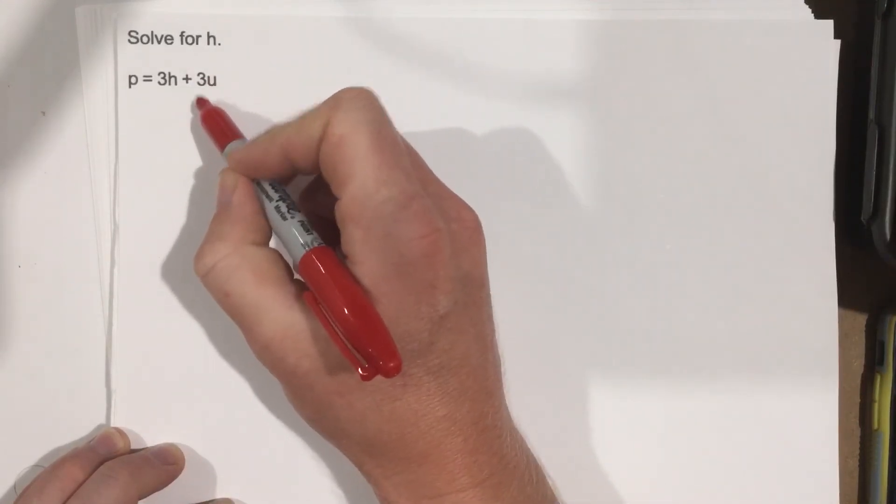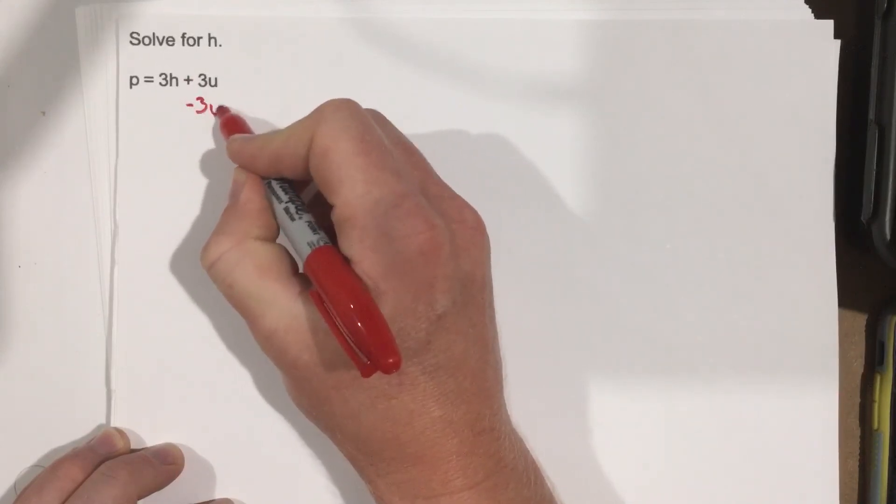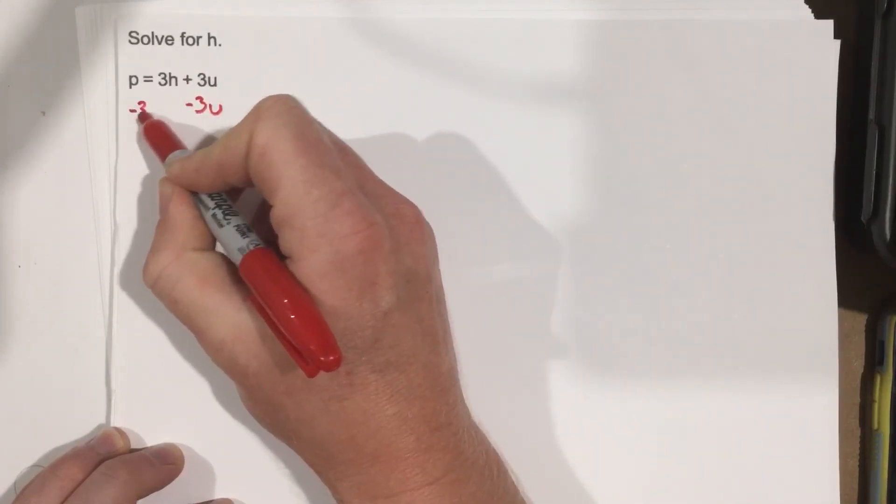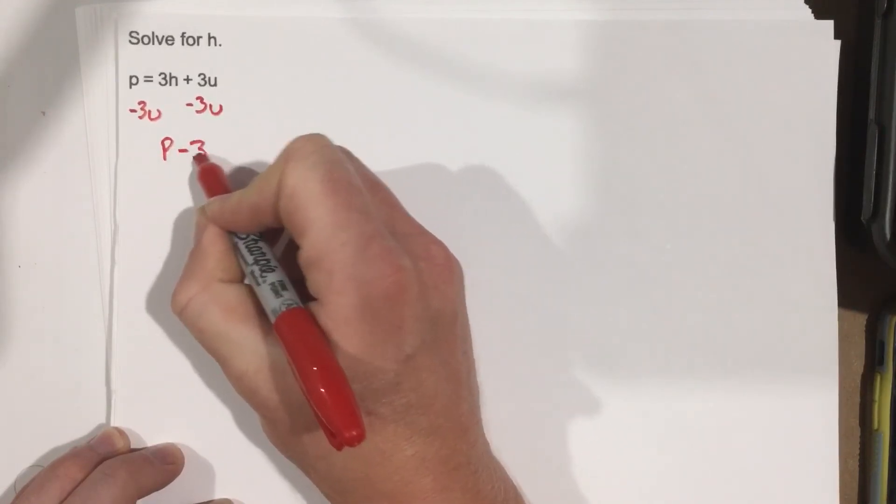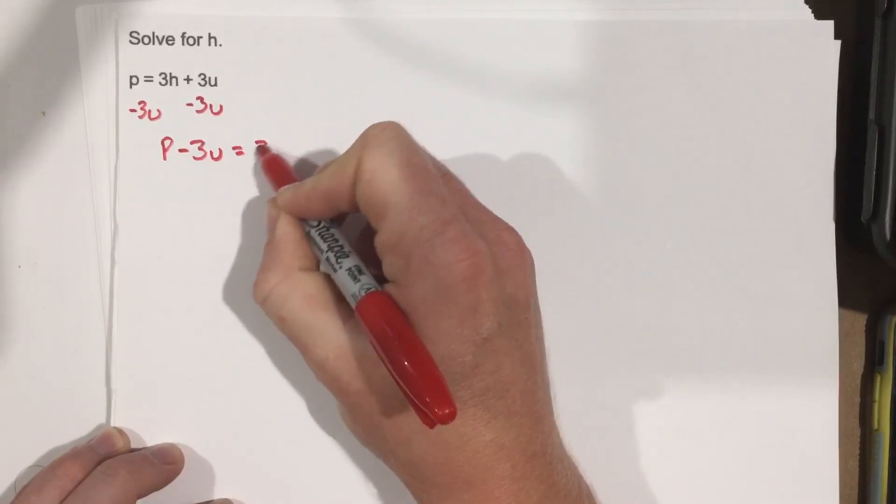We're going to subtract 3u on each side, so I'm going to subtract 3u and move it to the left side of the equation. That gives you p minus 3u equals 3h.